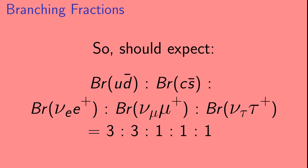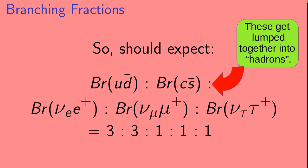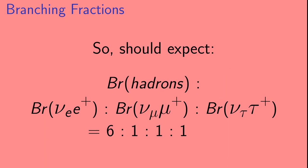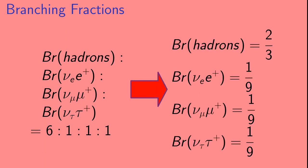So, we should expect that the ratios of the branching fractions to Ud bar, Cs bar, and each of the neutrino-antilepton final states have the values 3 to 3 to 1 to 1 to 1. Now, in practice, it's very difficult to tell the difference between the Ud bar and Cs bar final states. So, they usually get lumped together into a class called hadrons. So, we should expect the ratios of the rates for a W plus to go to hadrons and to each of the neutrino-antilepton final states to be 6 to 1 to 1 to 1. That implies that the W plus would decay to hadrons two-thirds of the time and to each of the neutrino-antilepton final states one-ninth of the time.